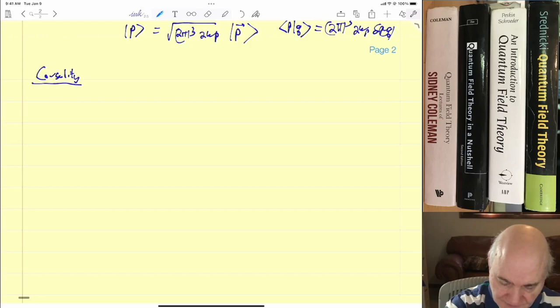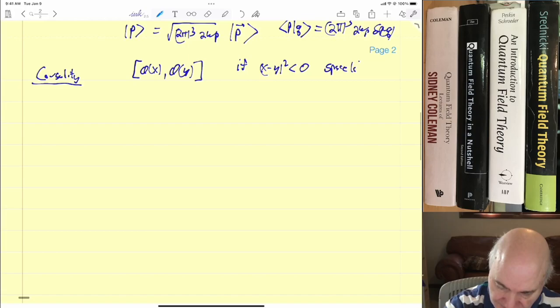Causality in quantum field theory means that if you have two fields, one at point x, this is a space-time point, and one at point y. If these are, if x minus y squared is less than zero, so with the Peskin and Schroeder metric that means it's space-like. That means, like, here's x and here's the light cone, and y is going to be somewhere like there. So this is space-like.